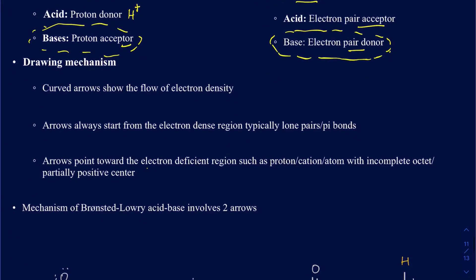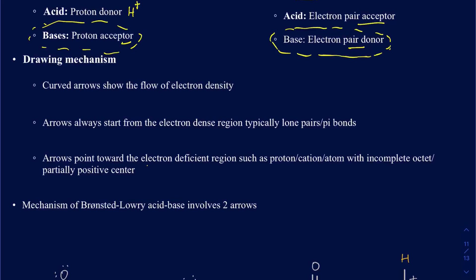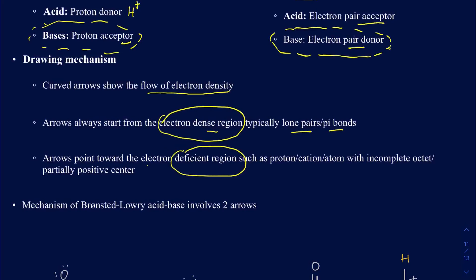When it comes to drawing the mechanisms, there are a few things you always want to keep in mind that will stay with you for the rest of organic chemistry. You always draw the arrow showing the flow of electron density — the movement of electrons. Your arrow always starts where you have the most electron-dense region, such as a lone pair, a negative charge, or a pi bond. The arrow is pointed toward where you have an electron-deficient region, such as a proton, a cation, an atom with an incomplete octet, or a center that's partially positive — those are all electron-deficient regions.